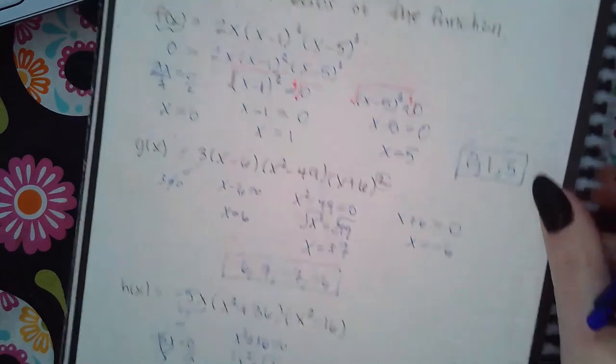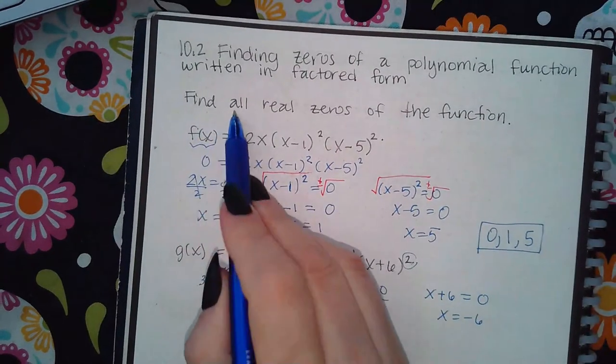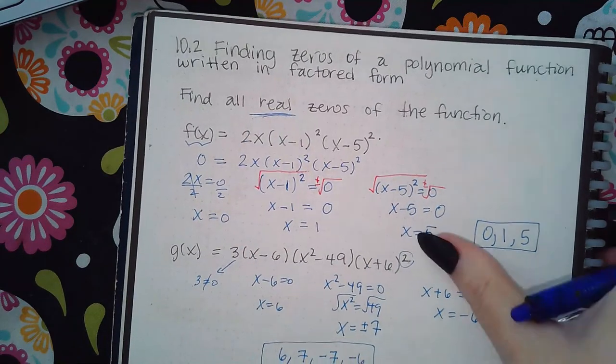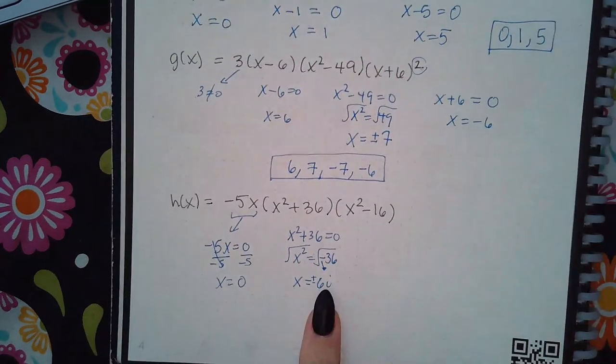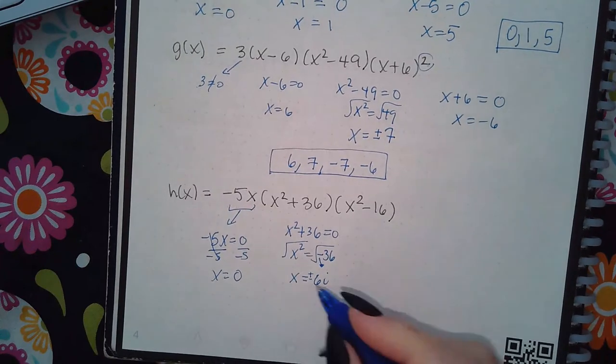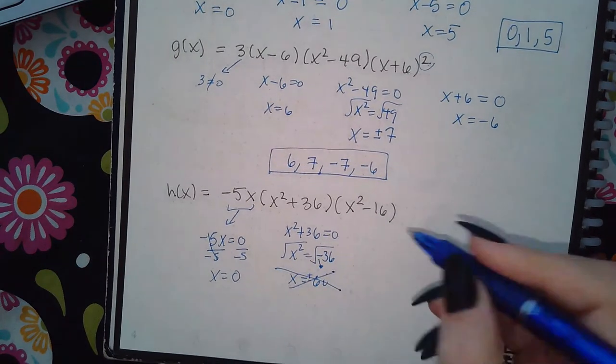Okay, now - it doesn't ask me for that. What did the directions ask me for? It said find all real zeros. So if I do end up getting imaginary answers, those are not going to be included in my answer because the problem only wants the real zeros in this particular topic.